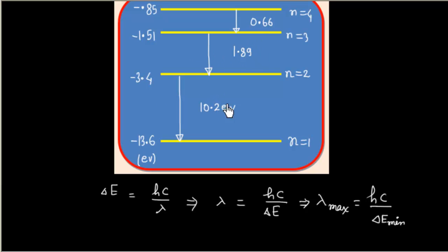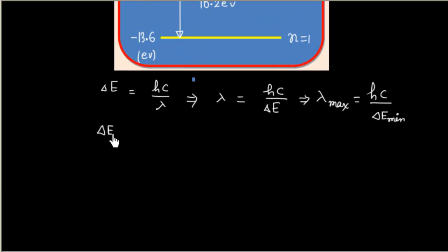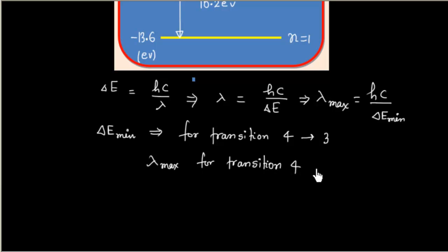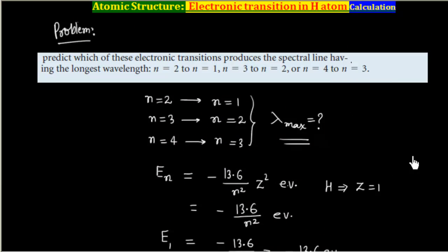The energy difference is minimum for the 4→3 transition, with ΔE = 0.66 eV. Therefore, the corresponding lambda maximum corresponds to the 4→3 transition, which will have the maximum wavelength.